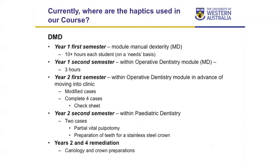Where do we use it? In first year, there is a manual dexterity module where each student receives 10 hours of training. They complete different tasks of increasing difficulty — starting with a simple eye shape, then moving to cross, donut, and other shapes. They start with direct vision, then progressively move to more difficult tasks including indirect mirror vision, which is required when working on upper teeth.